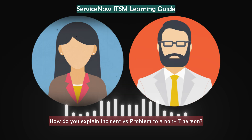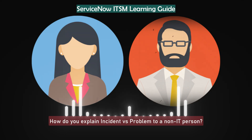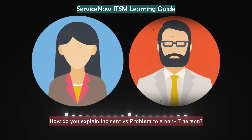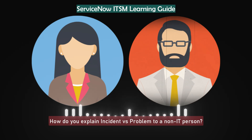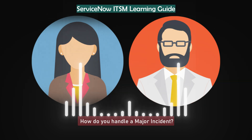How do you explain incident versus problem to a non-IT person? I usually keep it simple. An incident is when something breaks — like email not working or Wi-Fi is down and users cannot do their job, so we jump in fast, restore the service and move on. A problem, on the other hand, is what is causing these incidents. It is more investigative — finding patterns and fixing the real root cause. I always say incidents fix the symptoms whereas problems fix the causes. That helps business teams relate.